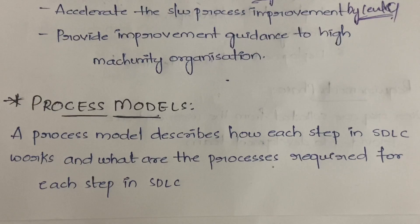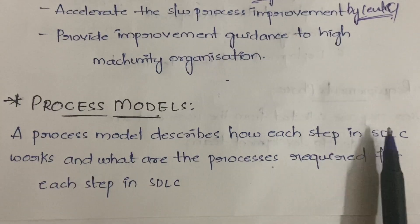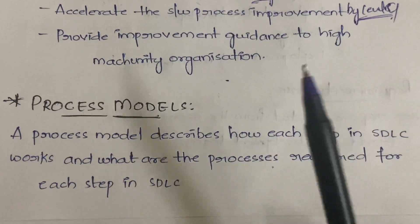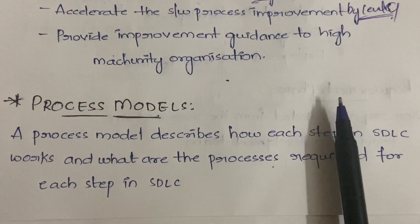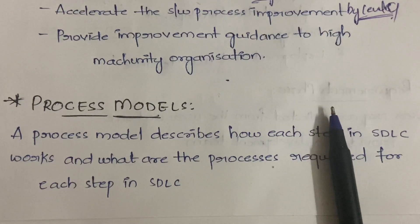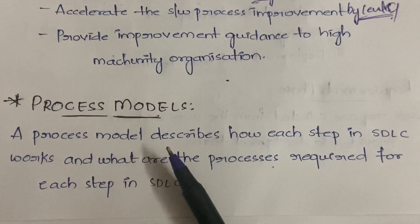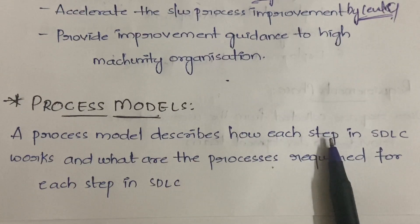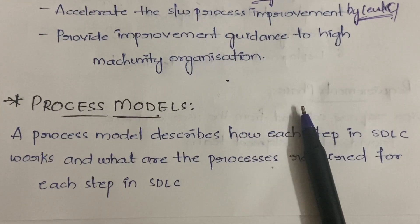A process model describes how each step in SDLC works. SDLC is nothing but Software Development Lifecycle. I'll explain what SDLC is in this video and what processes are required for each step. In SDLC we have different steps — six to seven steps. The number of stages is not fixed: some sources show six, some seven, some eight stages, so there is no exact representation for SDLC.